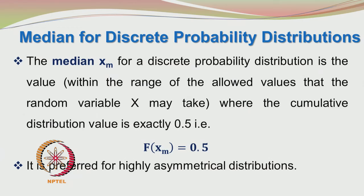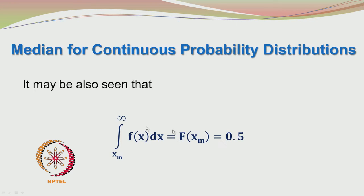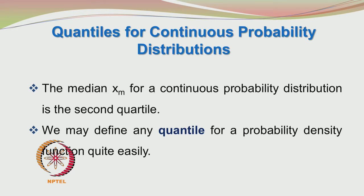The median xm for a discrete probability distribution is the value within the range of allowed values that the random variable x may take where the cumulative distribution value is exactly 0.5, that is F(xm) = 0.5. Similarly, for a continuous probability density function, the integral from minus infinity to xm of f(x)dx equals F(xm) equals 0.5. You locate xm such that both integrals — from minus infinity to xm and from xm to infinity — each equal 0.5. The median is the second quartile.